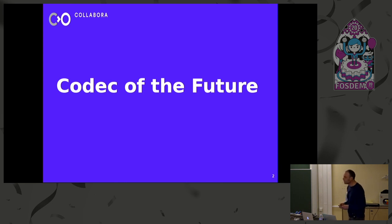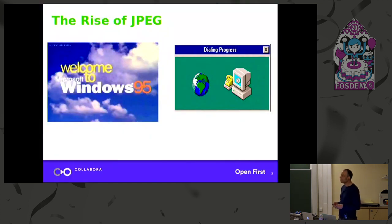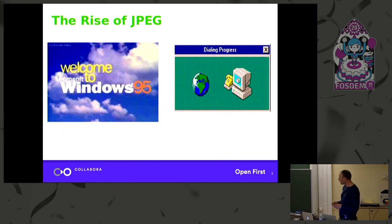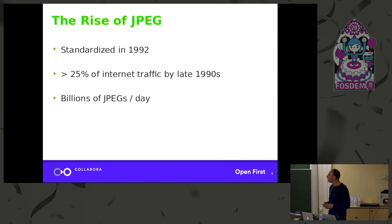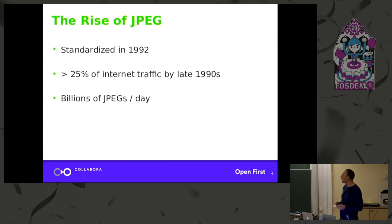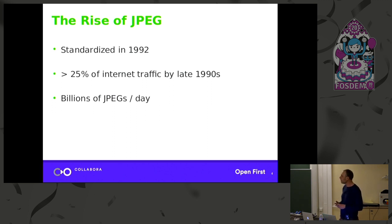To understand JPEG 2000, we have to go back to its predecessor, JPEG. This was standardized in 1992 and really came of age with the dawn of the internet. By the end of the 90s, about a quarter of internet traffic was JPEGs. And now we all have a JPEG encoder and decoder in our pockets. It was an extremely successful standard, but there were some issues.